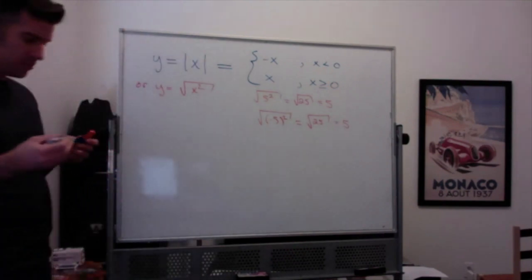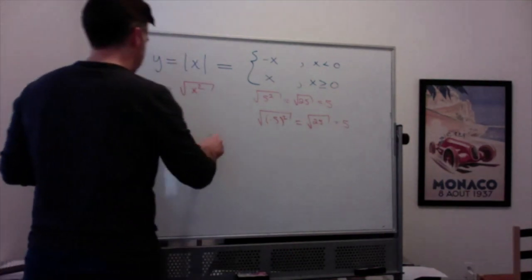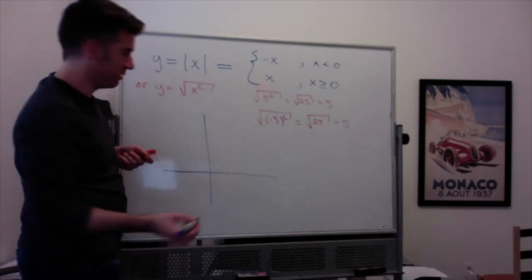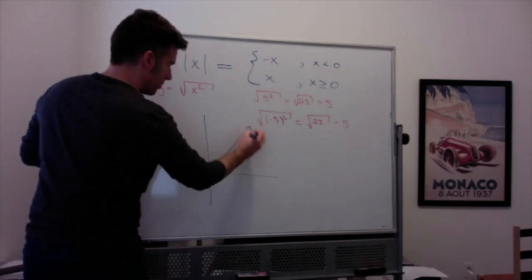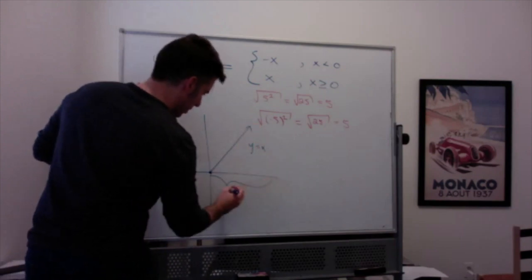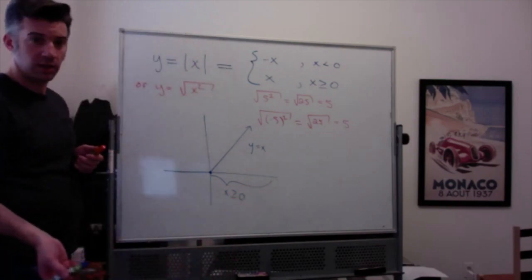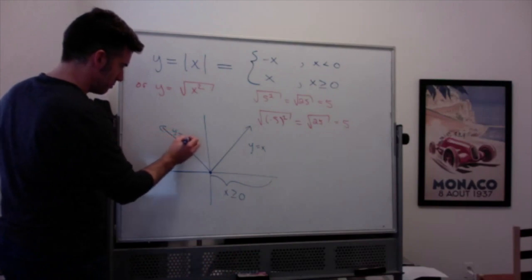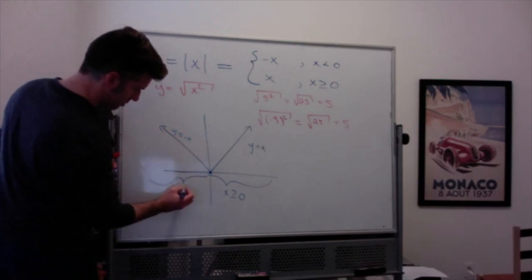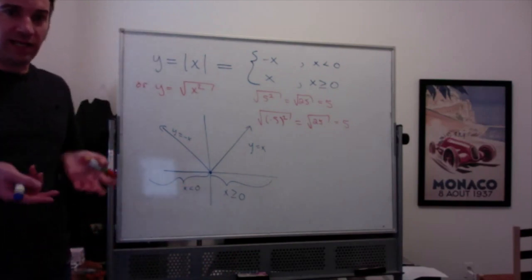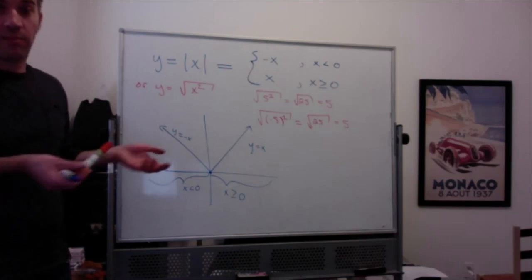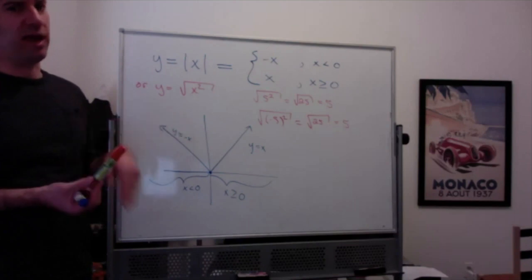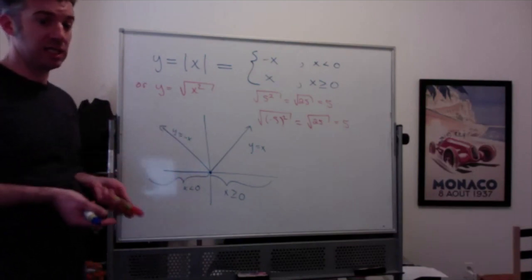So graphing absolute value of x as a piecewise function: y equals x when x is greater than or equal to zero — that's a line going up to the right — and y equals negative x when x is less than zero — a line going up to the left. That's why the absolute value function looks the way it does. When you see absolute value of something in future classes, think of it as a piecewise function with at least two pieces.